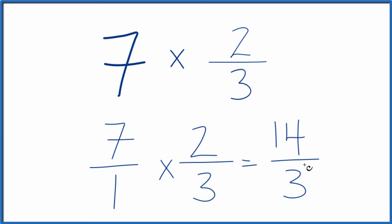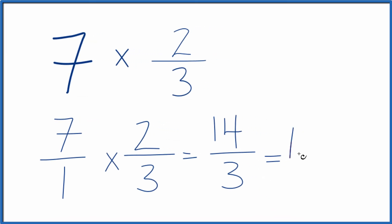This is an improper fraction. 14 is larger than 3. We could change it to a mixed number. So 3 times 4 is 12. And then we'd have 2 left over. We bring the 3 across. And you could call 14 thirds. That's the same thing as 4 and 2 thirds.